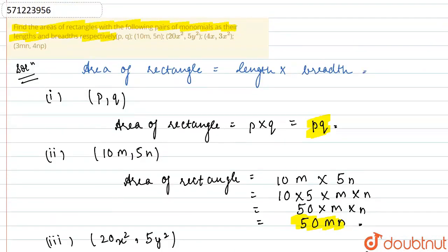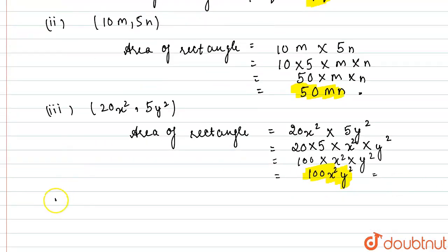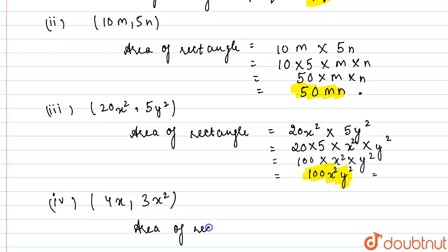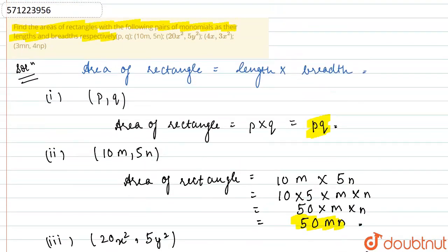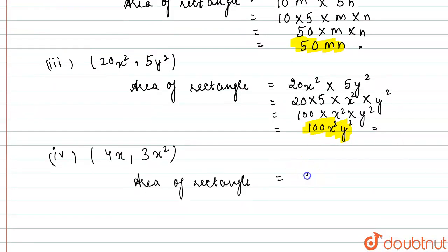The fourth part has the pair as 4x comma 3x². Area of rectangle will be equal to 4x multiplied by 3x². Writing like terms together: 4 into 3, multiplied by x into x².